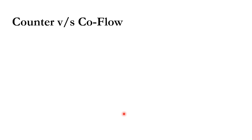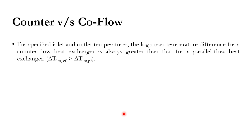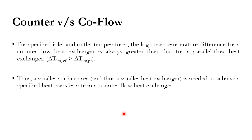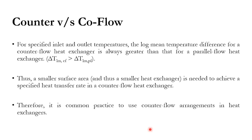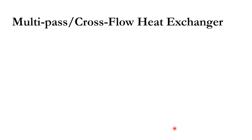Comparing counter flow versus co-current (parallel) flow: in the counter flow system, the value of LMTD is higher than in the co-current system. Looking at Q = U·A·ΔTm, if we want to compute the area A, it is inversely proportional to ΔTm. Therefore, a higher LMTD means a smaller heat exchanger area is required. Since the LMTD for counter-current is higher, a smaller area is needed compared to co-current flow. This is why it is common practice to use counter-flow arrangements in heat exchangers.